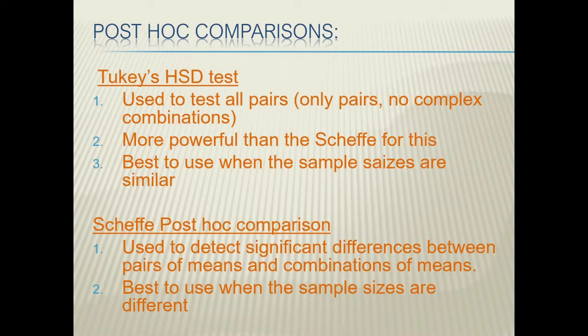If we have a really large variation in sample sizes, then we're going to switch to Scheffe. This will also detect the differences between the means, between the different groups and identify which groups have differences. But this is what we want to use when our sample sizes are very different from each other.